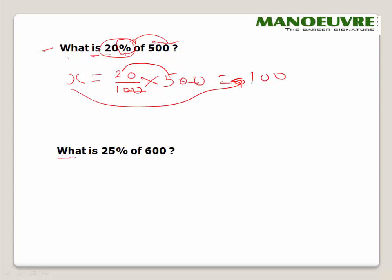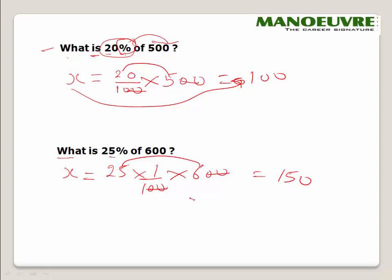Another example: What is 25% of 600? x = 25/100 × 600. The zero cancels, and 25 × 6 = 150. So 25% of 600 is 150. This is how we calculate the percentage of a number when the percentage is given and we need to find the value.